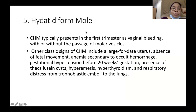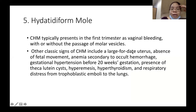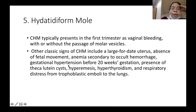The fifth gynecology topic is hydatidiform mole, which typically presents as bleeding in the first trimester with or without passage of molar vesicles. Other classic signs include large-for-date uterus (uterus larger than the computed AOG), no fetus, anemia secondary to occult hemorrhage, hypertension, hyperemesis, hyperthyroidism, and respiratory distress.